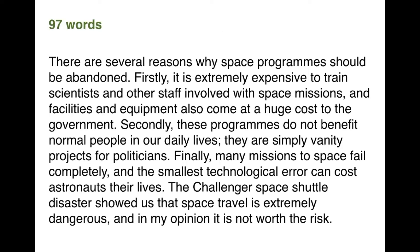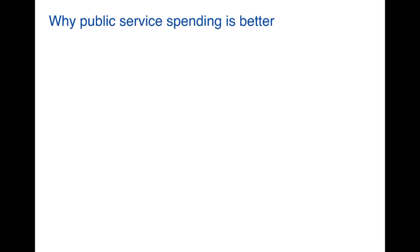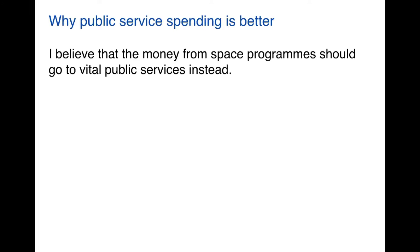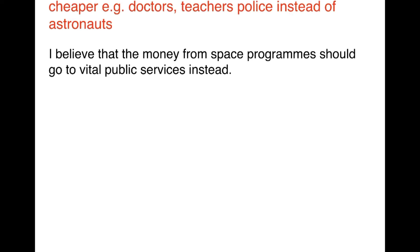That paragraph is 97 words long. As you can see, it's a typical firstly, secondly, finally paragraph, starting with a topic sentence and finishing with an example — five sentences, just going through the ideas from our plan. Next, we did the same thing for paragraph three using the plan to write a five-sentence paragraph. Our first point was why public service spending is better, so we needed a topic sentence. The first sentence is: 'I believe that the money from space programmes should go to vital public services instead.' Now let's explain that opinion. Our first point was it's cheaper to employ public sector workers.